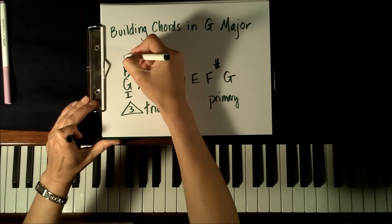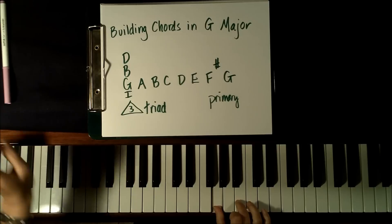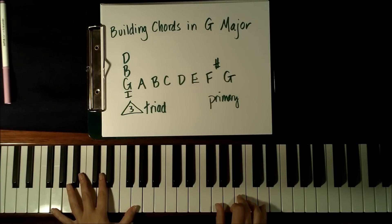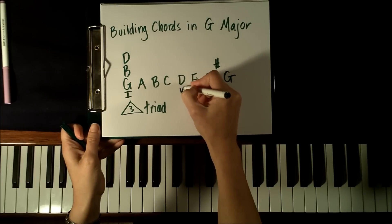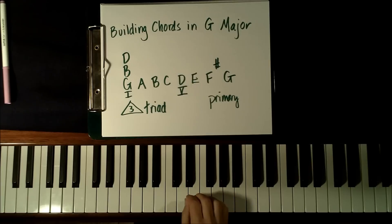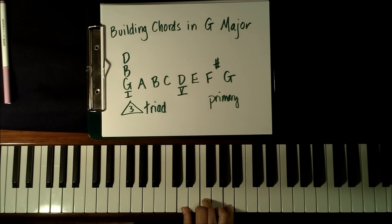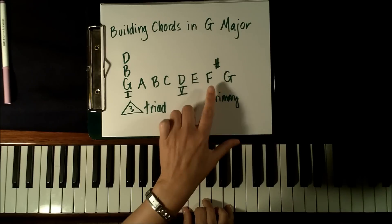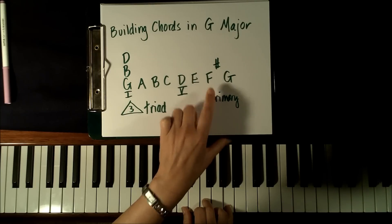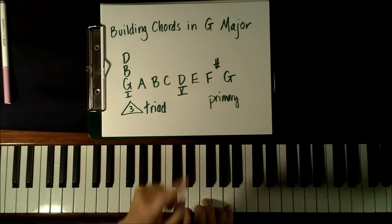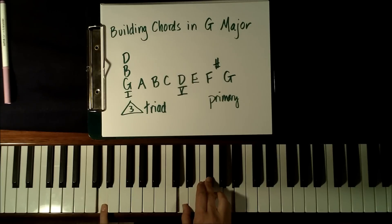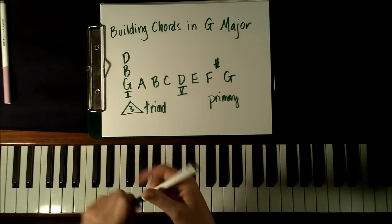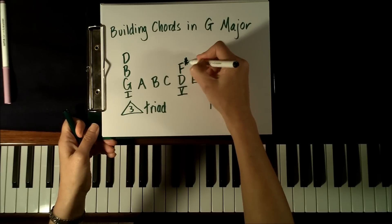Any time we build a triad, we always build it in skips — the notes we play are always separated by another note. Here's the G triad. This is one of the primary chords in the key of G, and it's major. Another primary chord in the key of G is the V chord. When we start on D, we're going to need the notes D, F, and A. But there's no F in the key of G — the F in the key of G is actually F sharp. So when we play the chord for D, we have to move that middle note onto F sharp. This is the V chord in the key of G, and that chord is D major. The three notes are D, skip up to F sharp, skip up to A.